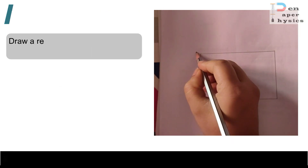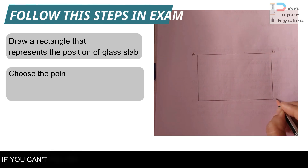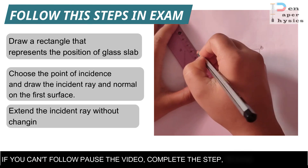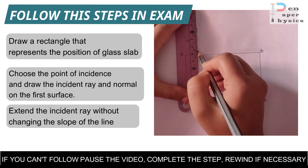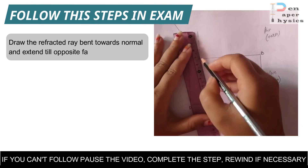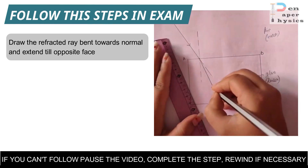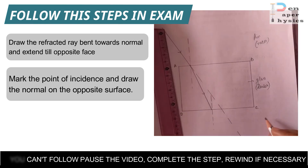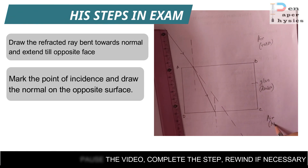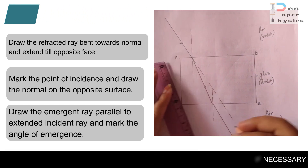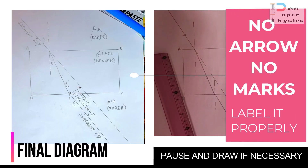How to draw the glass slab diagram in exam: First, draw a rectangle representing the glass slab. Choose the point of incidence and draw the incident ray and a normal through it on surface AB. Extend the incident ray without changing its slope. Draw the refracted ray bending towards the normal and extend it to the opposite face. On the opposite face CD, mark the point of incidence and draw a normal. Then draw the emergent ray bent away from the normal and parallel to the incident ray. Remember: no arrow means no marks, and you must label it properly.